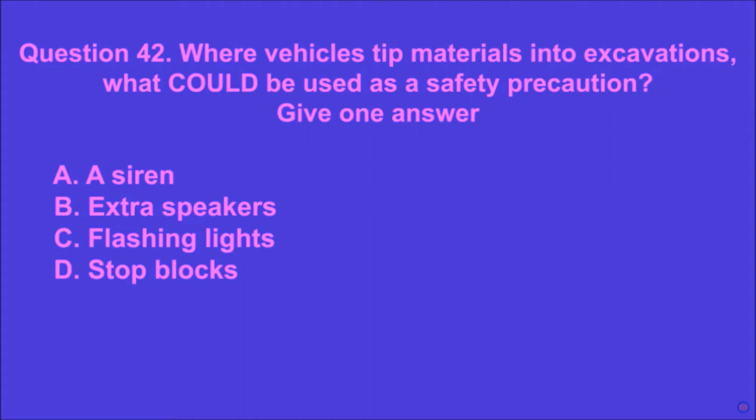Question 42: Where vehicles tip materials into excavations, what could be used as a safety precaution? Give one answer. A: a siren, B: extra speakers, C: flashing lights, D: stop blocks. D is the correct answer.